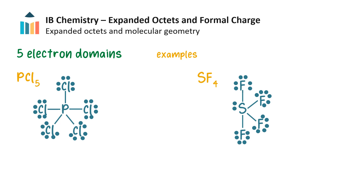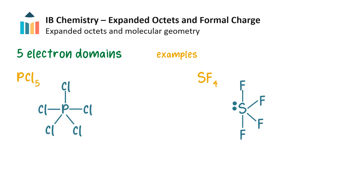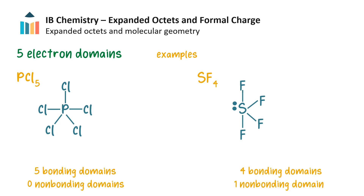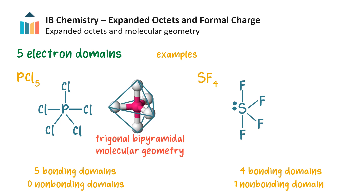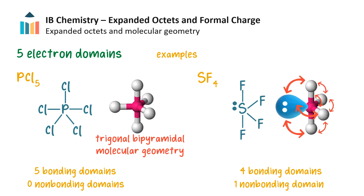Removing the lone pairs on the outer atoms for simplicity, both compounds have 5 electron domains around the central atom. However, phosphorus has 5 bonding domains while sulfur has 4 bonding and 1 non-bonding domain. Electron domains repel each other so as to minimize the overall repulsion. In phosphorus pentachloride, all electron domains are equivalent bonding domains, so they repel each other equally, resulting in a trigonal bipyramidal electron domain geometry as well as a trigonal bipyramidal molecular geometry.